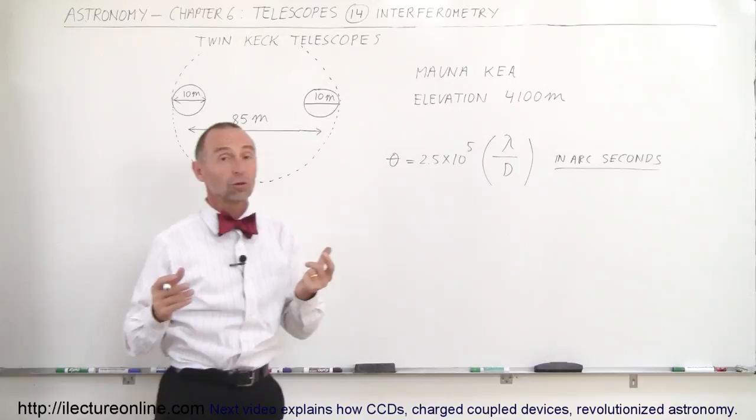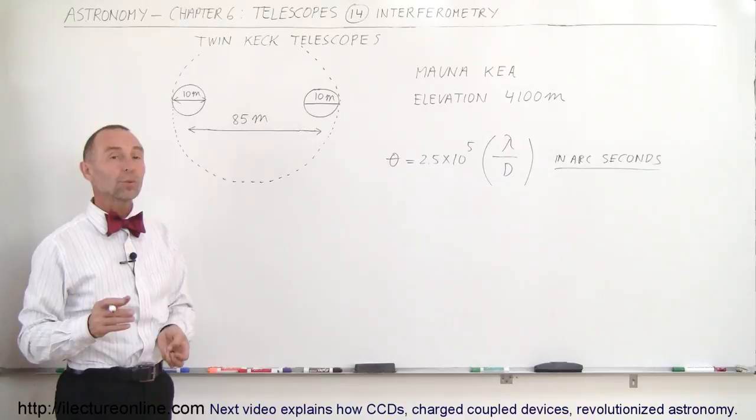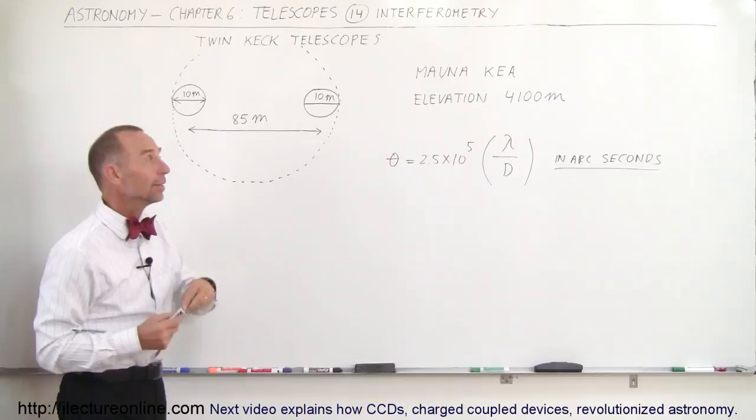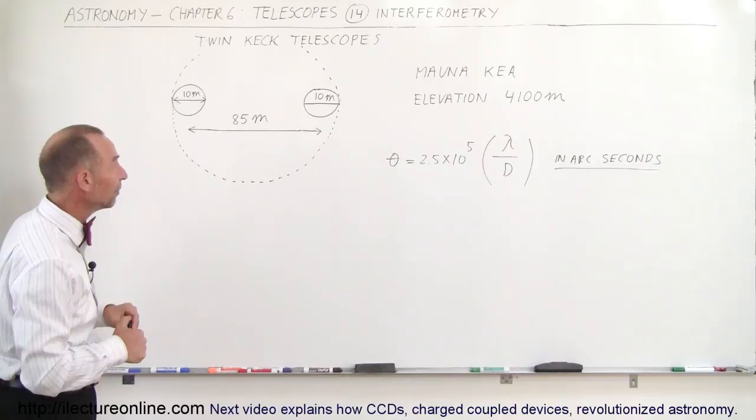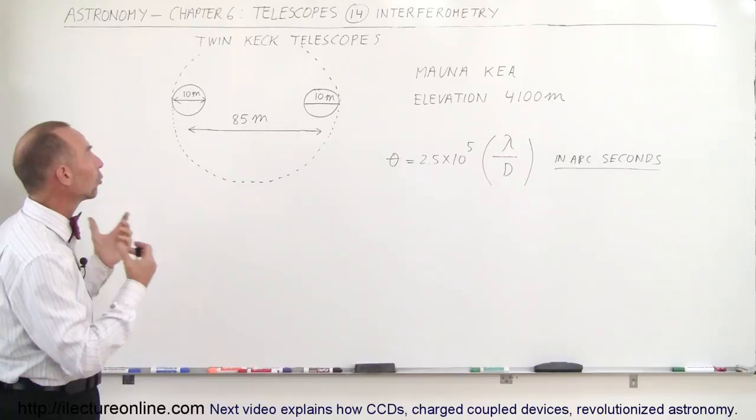What we do sometimes is we'll take two telescopes at once. The Keck telescopes on top of Mauna Kea in Hawaii at an elevation of 4100 meters above sea level—that's more than 13,000 feet above sea level—we have two telescopes side by side. They're identical, kind of like twin telescopes. We call them the twin Keck telescopes: Keck 1 and Keck 2.